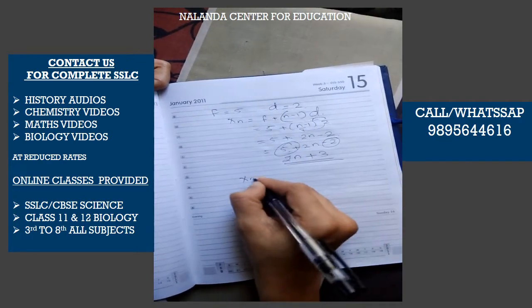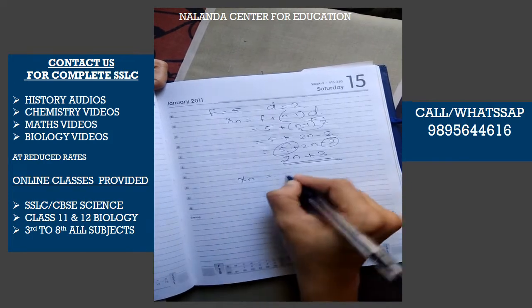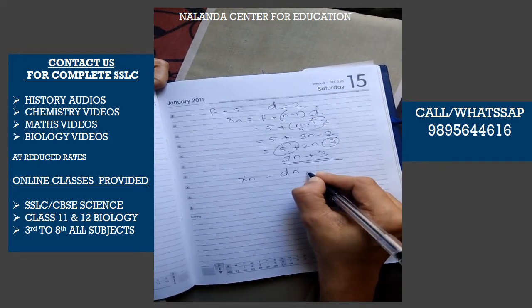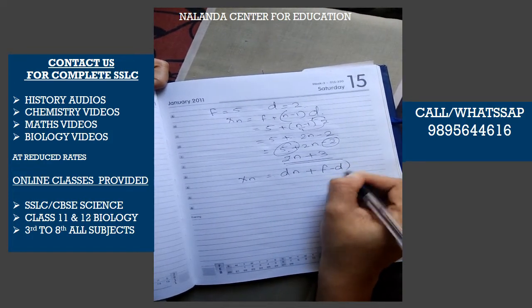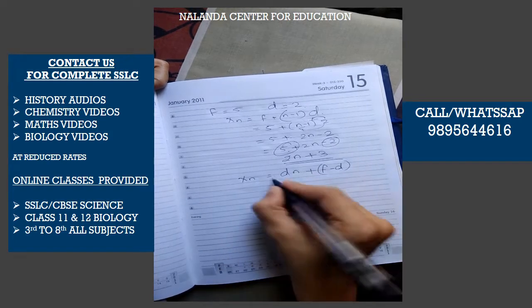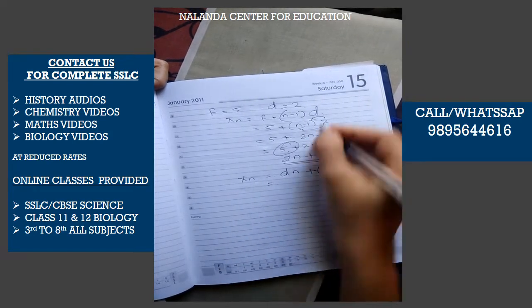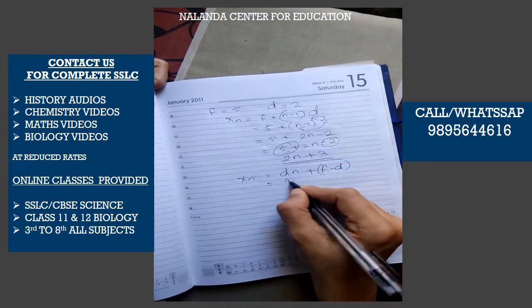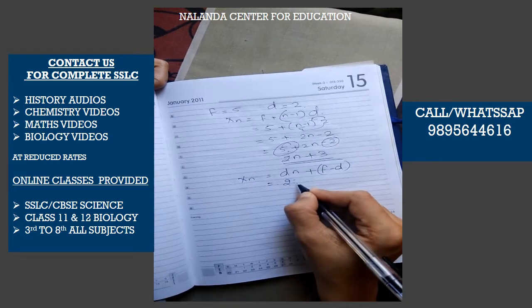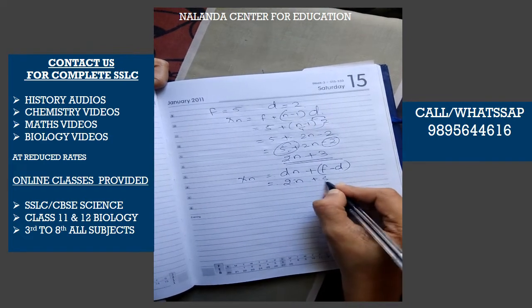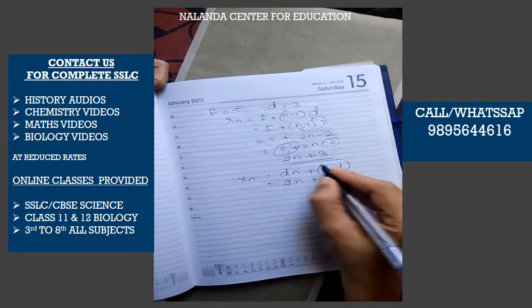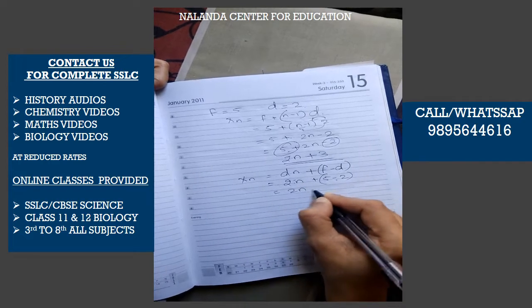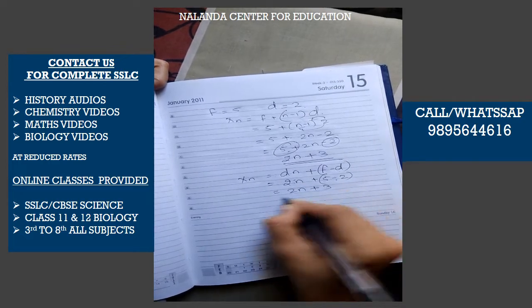This is the general formula. Using the second form dn + (f-d): 2 into n plus 5 minus 2, which is 5 minus 2 equals 3. So we get 2n plus 3. Same result — both formulae agree.